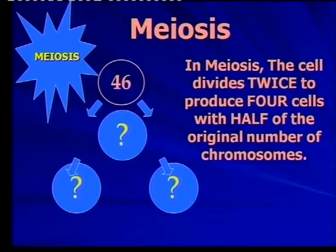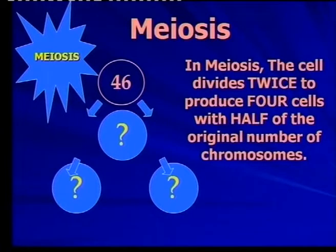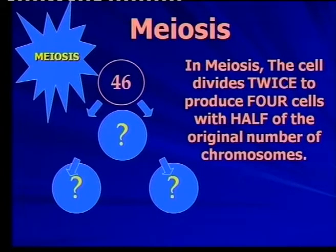Meiosis must take place. In meiosis we have two divisions, where one diploid cell at the end gives us four cells with half the original number of chromosomes. In other words, two divisions where we start with the diploid number — 46 chromosomes, the two sets, one from the father and one from the mother — so that in the end we have the haploid, which means the single set.